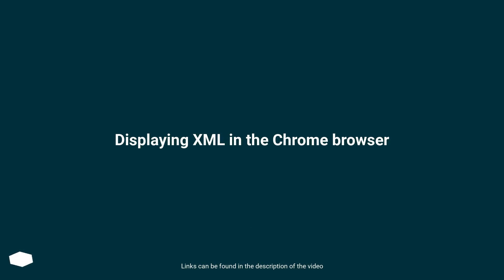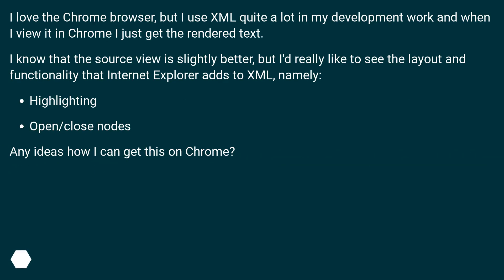Displaying XML in the Chrome Browser. I love the Chrome Browser, but I use XML quite a lot in my development work and when I view it in Chrome I just get the rendered text. I know that the source view is slightly better, but I'd really like to see the layout and functionality that Internet Explorer adds to XML, namely highlighting and open/close nodes. Any ideas how I can get this on Chrome?